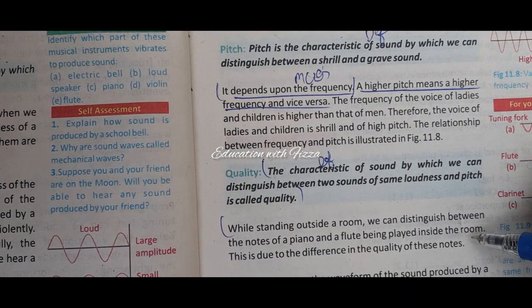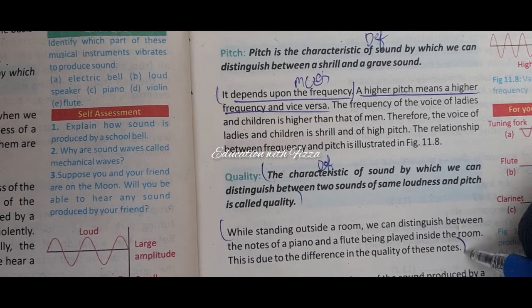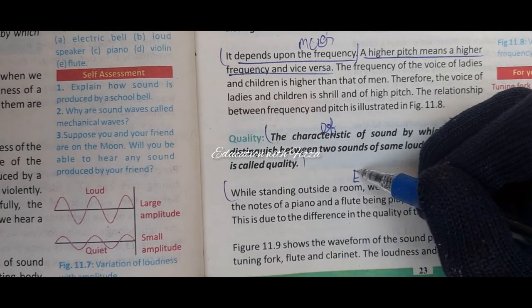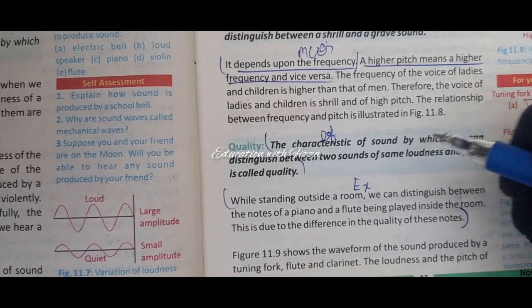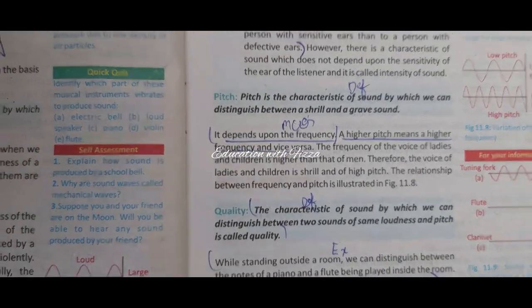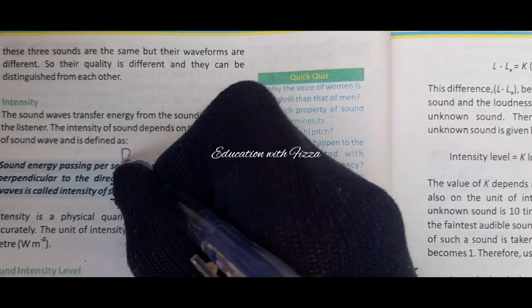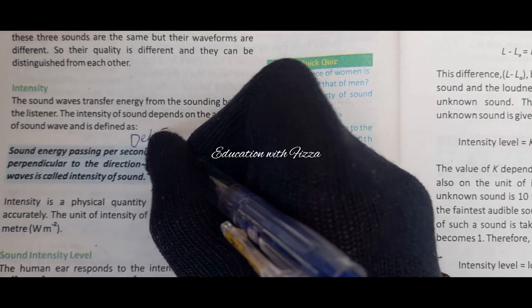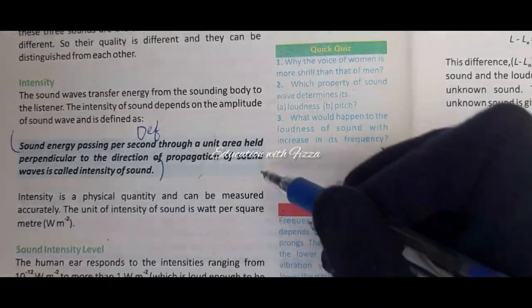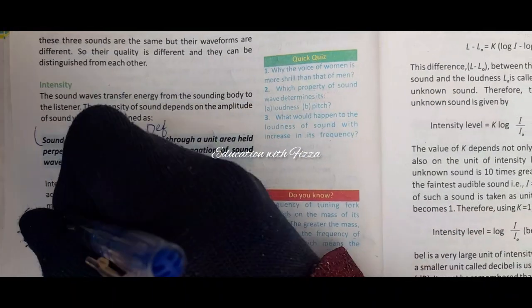After pitch, the next characteristic is quality of sound — learn its definition. Then explain the next two or three lines and the example given. The last characteristic on the next page is intensity of sound.